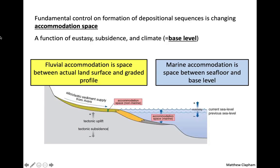The fundamental control on depositional sequences — their formation and preservation — is accommodation space. Quite simply, how much room is there? It's going to be a combination of eustasy, subsidence, and climate. We'll call this base level. Climate is generally the least important of these factors.